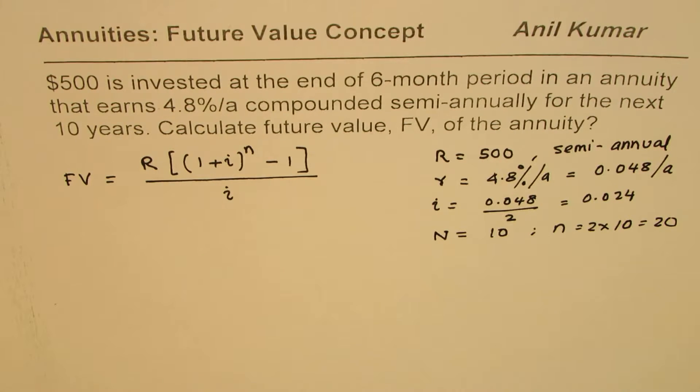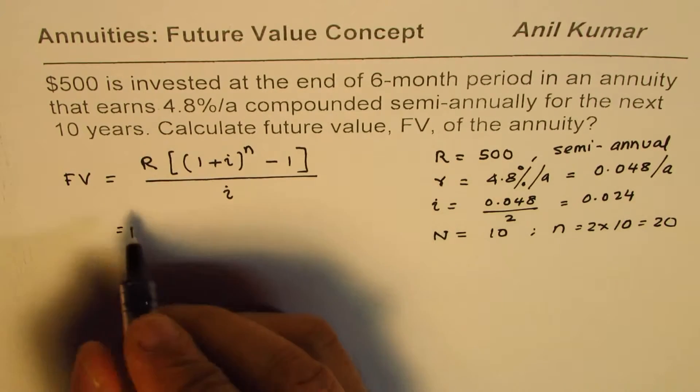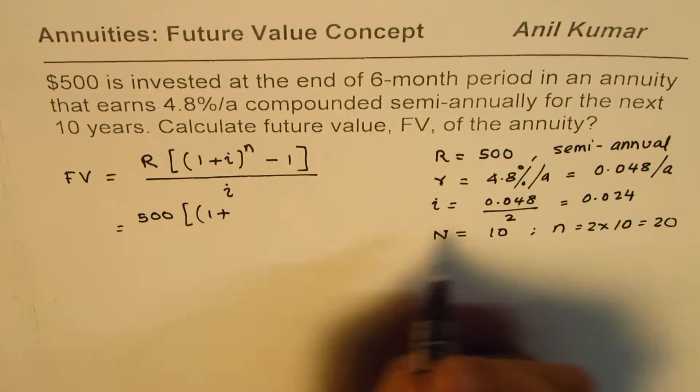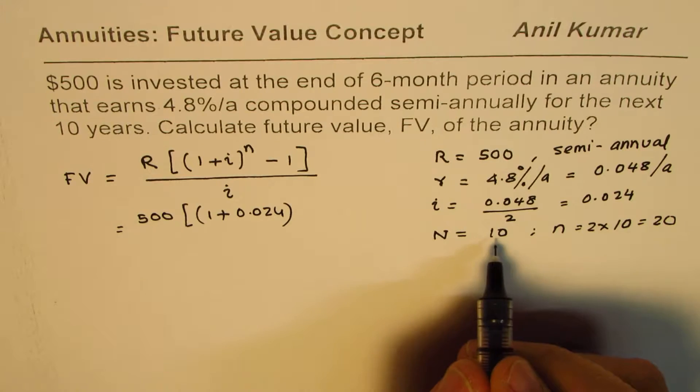I hope this calculation is absolutely clear. Now you can substitute the values. So you have R as 500, and then you have (1 + i) which is (1 + 0.024) to the power of n which is 20, minus 1, divided by i which is 0.024.